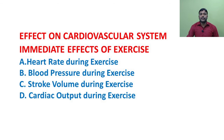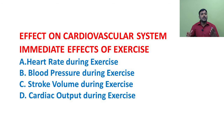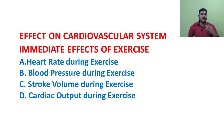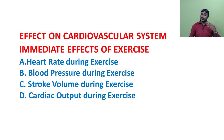Stroke volume during exercise: the normal stroke volume is between 70 ml to 80 ml per beat. In trained male athletes during strenuous activity, it may reach up to 160 ml per beat. Cardiac output also increases with physical exercise because both heart rate and stroke volume increase.